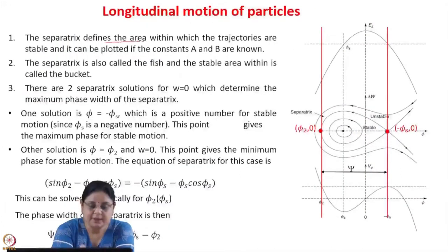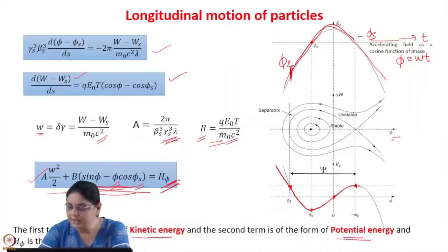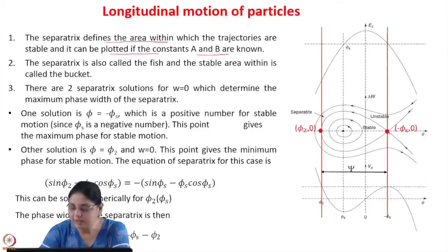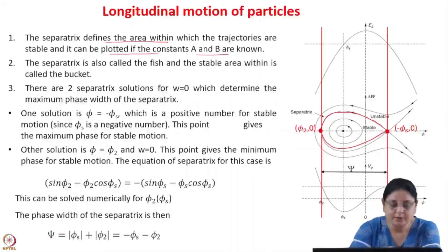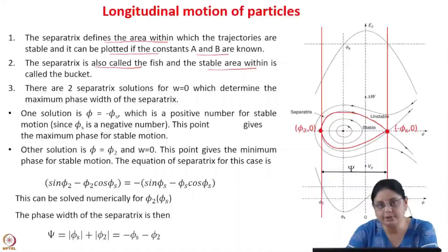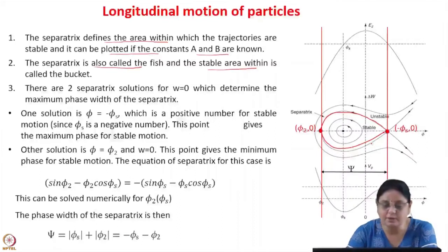The separatrix defines the area within which the trajectories are stable, and it can be plotted if the constants A and B are known. We can plot this equation in phase space for phi and delta w — the longitudinal phase space — and the stable motion extends from phi equal to minus phi s to phi equal to phi 2. This curve is called the separatrix. The separatrix is also called the fish, and the stable area within is called the bucket. All trajectories lying inside the separatrix are stable; all particles lying outside will execute unstable motion.